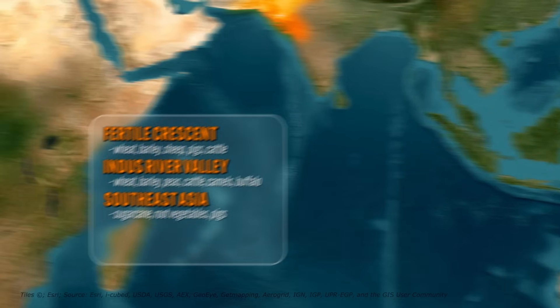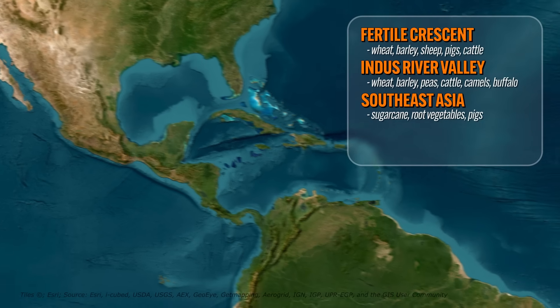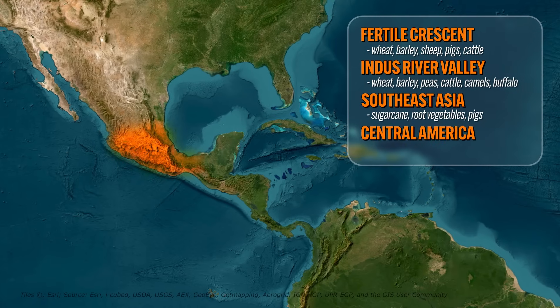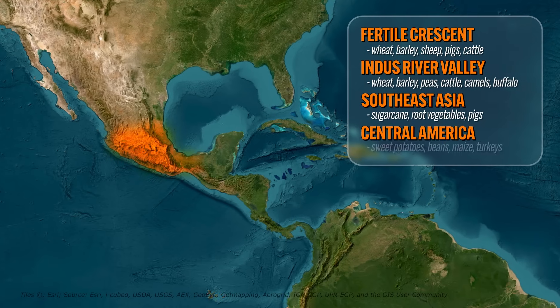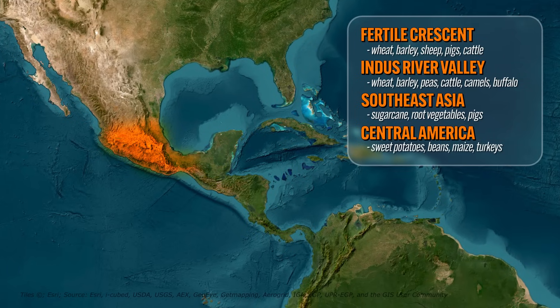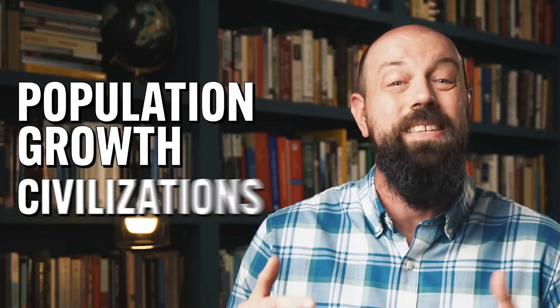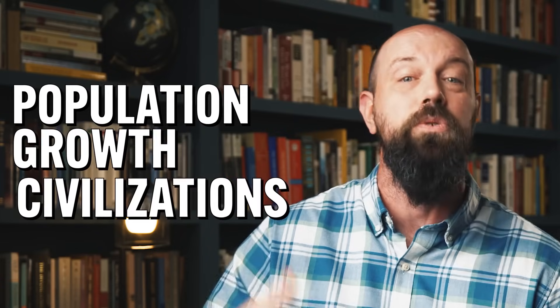Finally, checking in from the western hemisphere is the development of agriculture in Central America. They were able to domesticate plants like sweet potatoes, beans, and maize, and animals like the turkey. We're talking about a transition that happened over the course of centuries and millennia, but wherever this change occurred, it created the conditions for populations to grow and civilizations to develop.